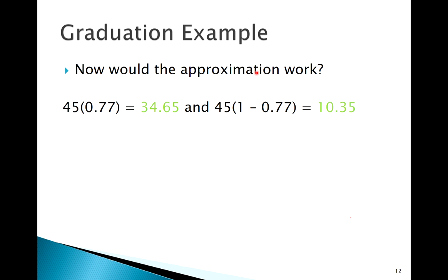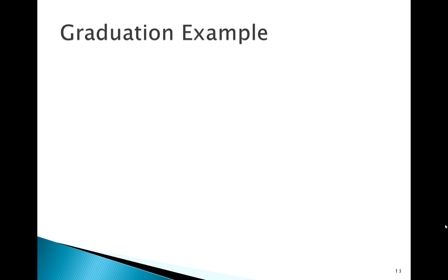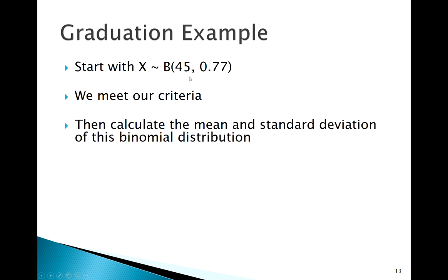Testing out those numbers, we're greater than 5, we're greater than 10. Some books use 10 as well. So we're in good shape. So our example, we're starting here with a binomial. These parameters, n equal to 45, p equal to 0.77. We meet our criteria for the approximation.